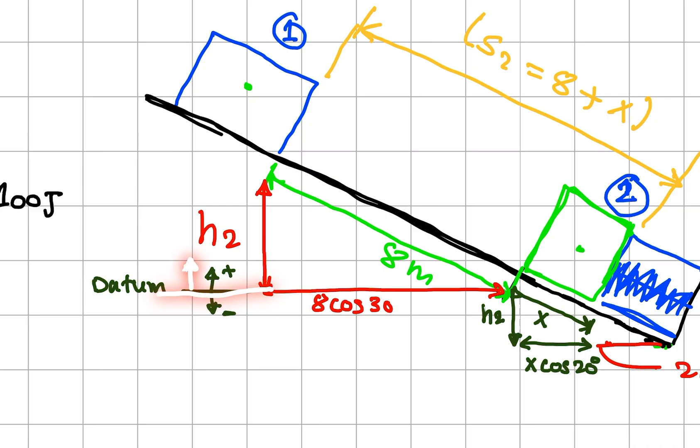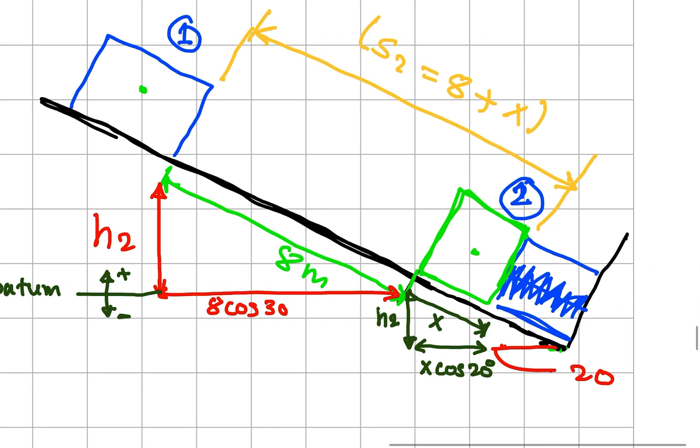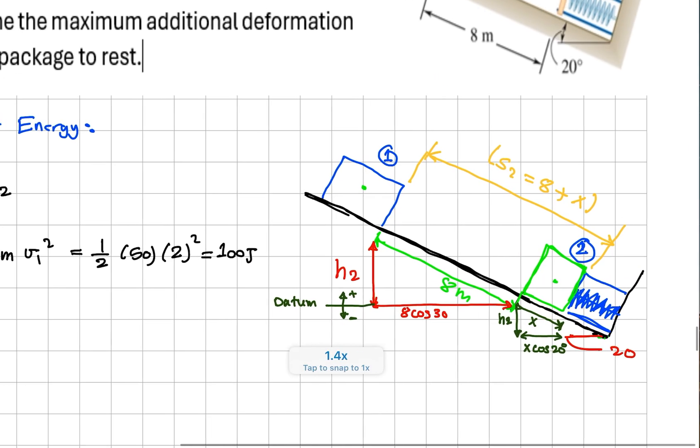I'm going to set the datum here. This is positive and downwards is negative. We have 8 meters which is going to be analyzed into two components: the vertical component is positive and negative, and the horizontal component. x also has two components: the vertical one is h2, which is x sin θ, and the horizontal one is x cos θ. This is the final distance of the block when it moves from here to here, which is s2 equals 8 meters plus x.